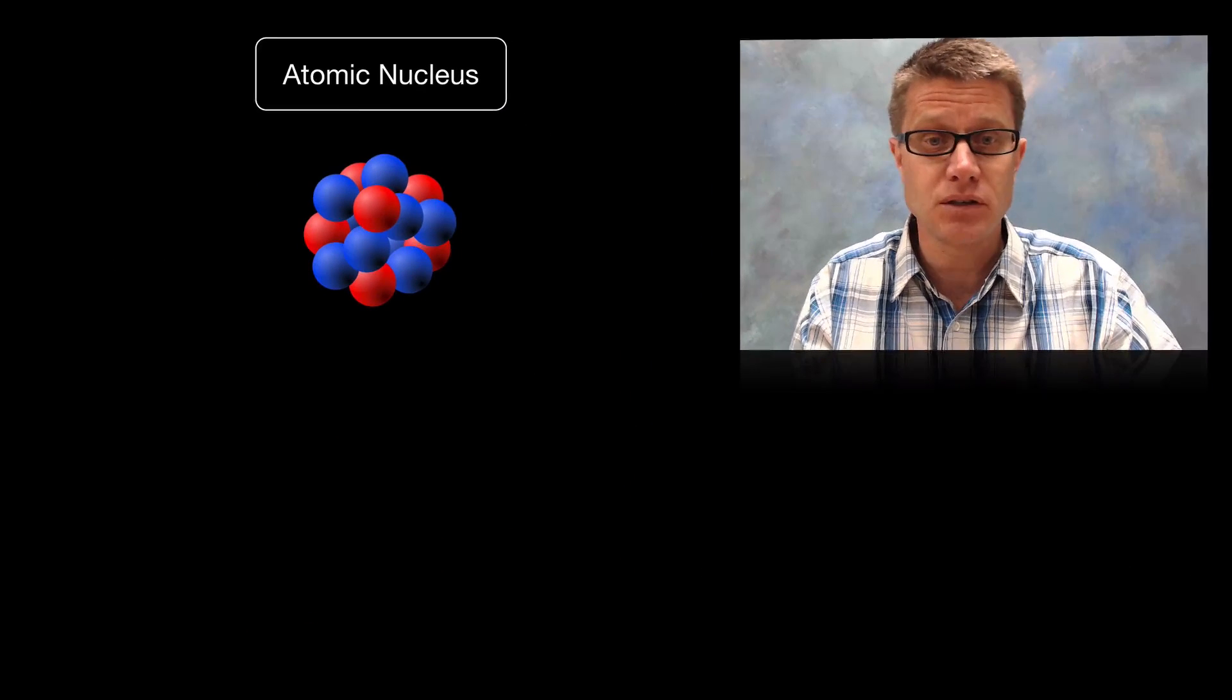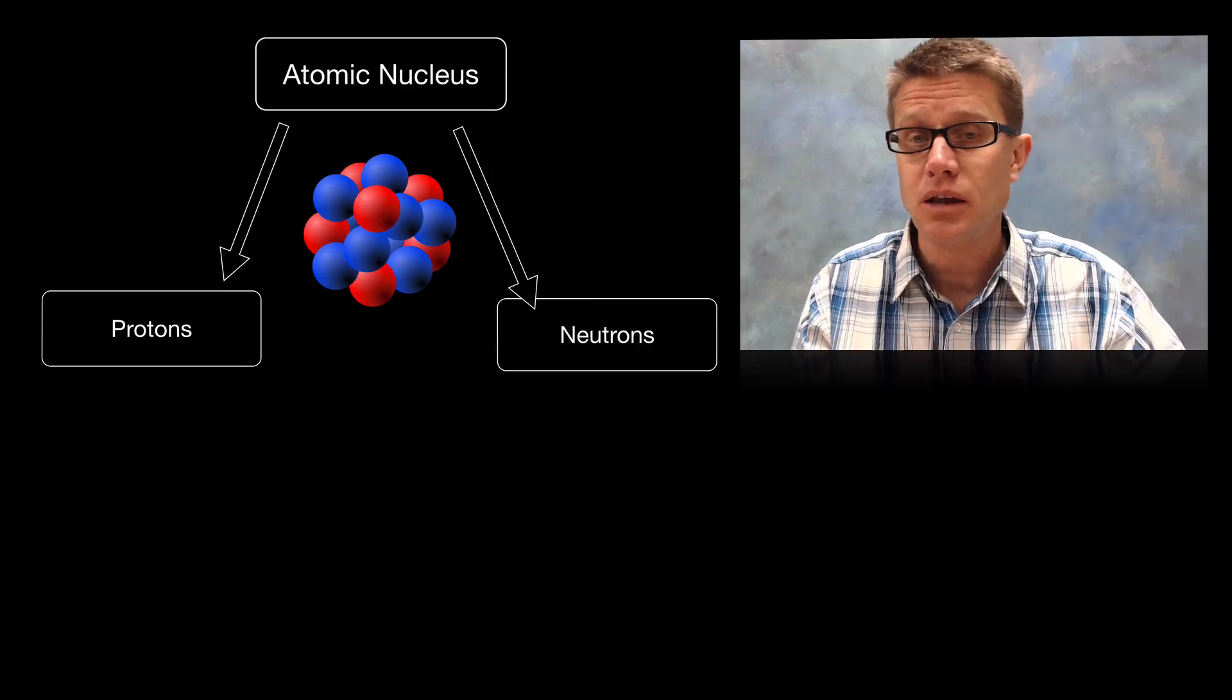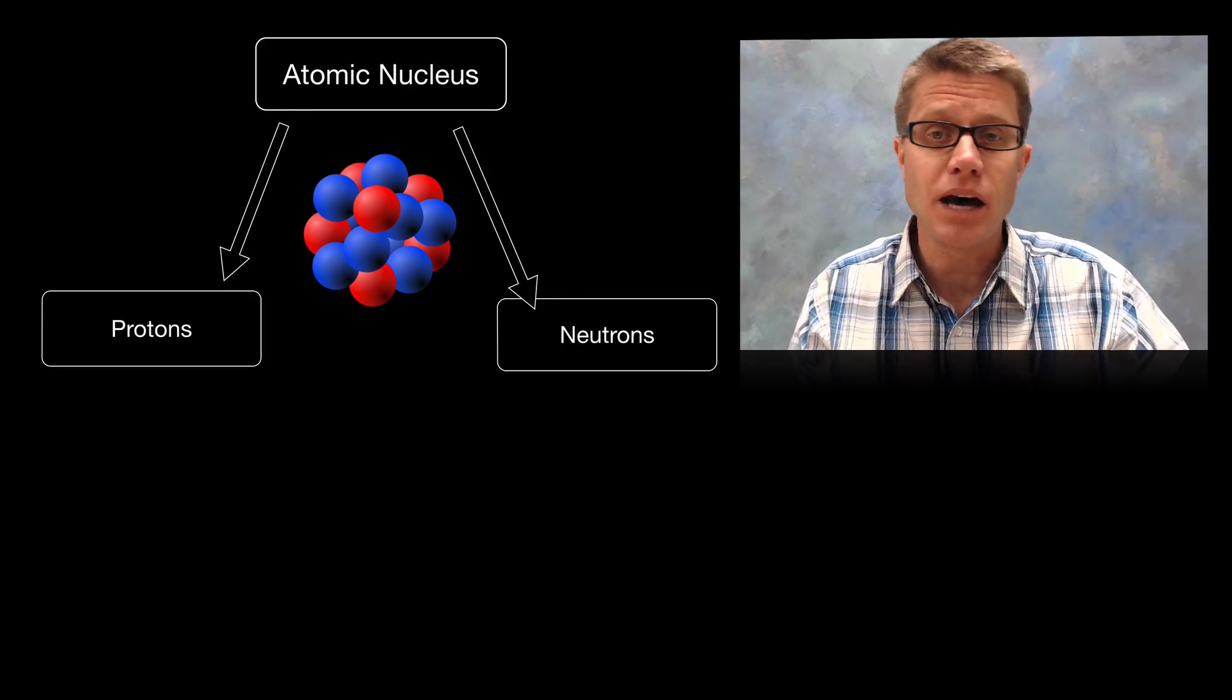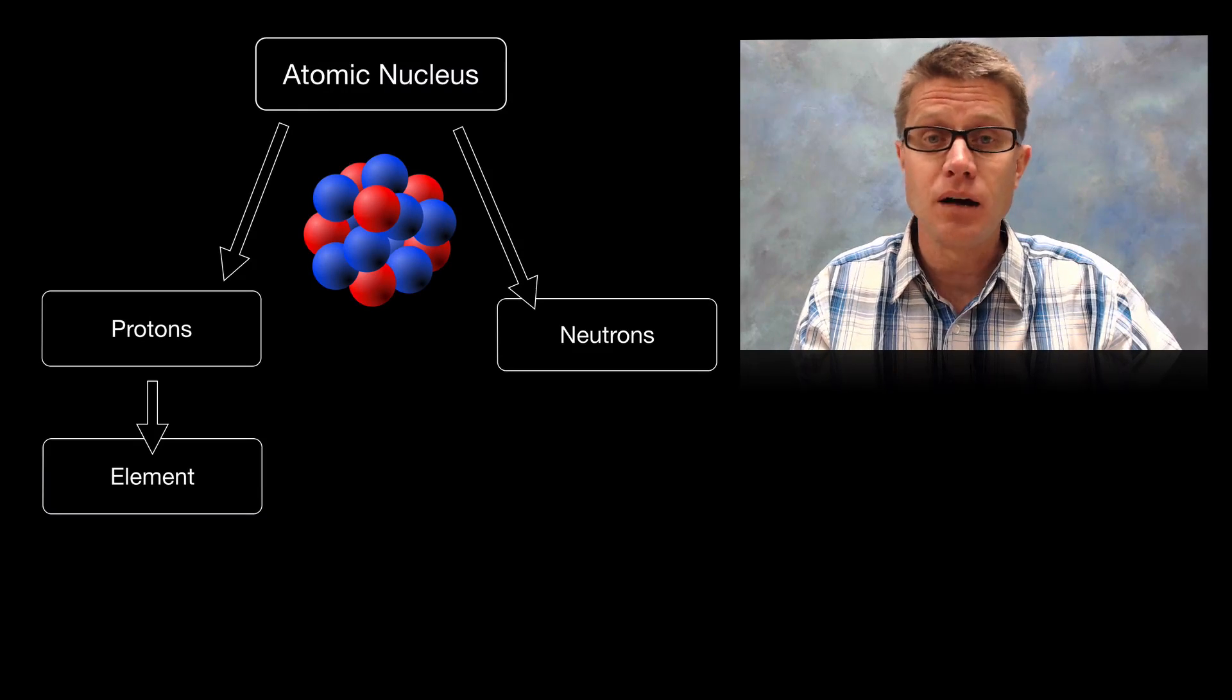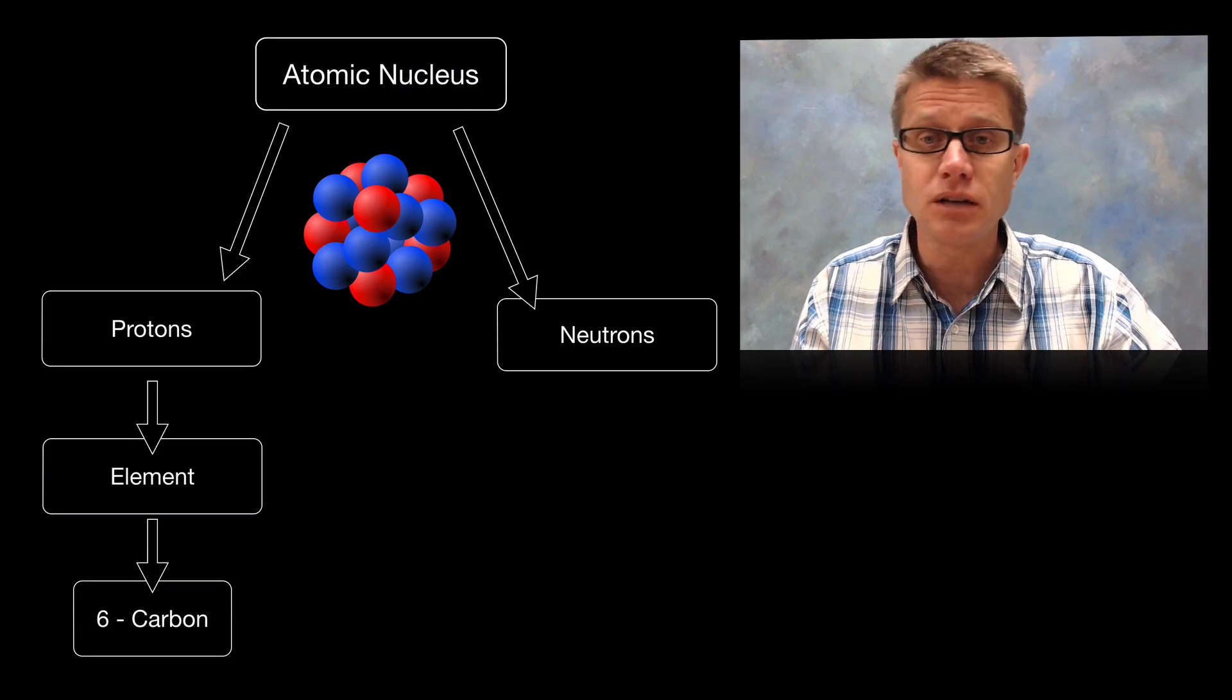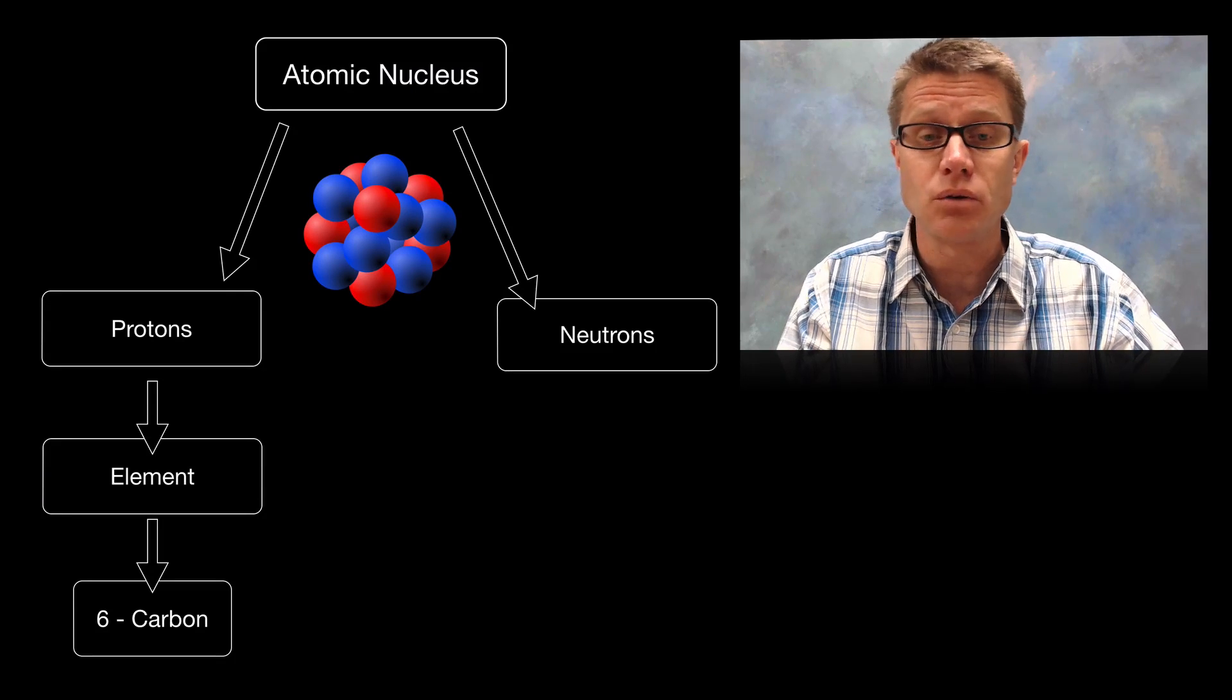tightly packed positive nucleus, which we know now is made up of positive protons but also these neutral neutrons. Now the protons are important because the number of protons tell us what the element is. In other words if it has got 6 protons we know that it is going to be carbon. If it has got 1 proton then we know it is going to be hydrogen.